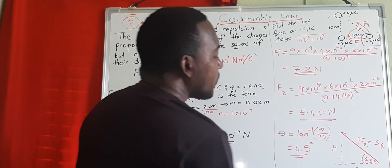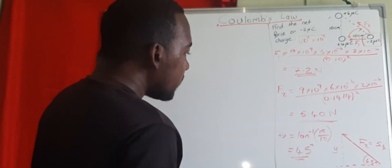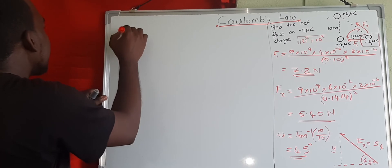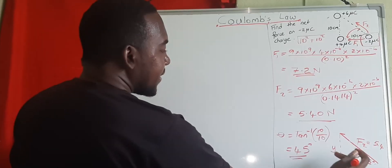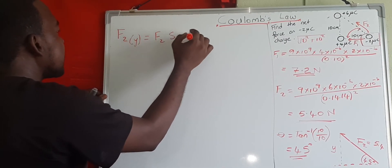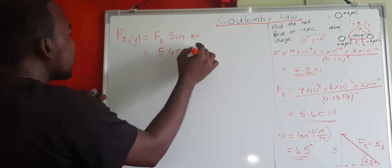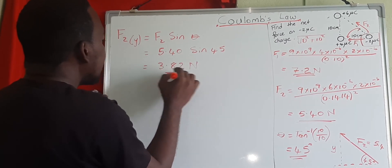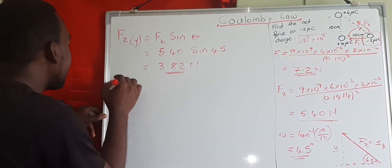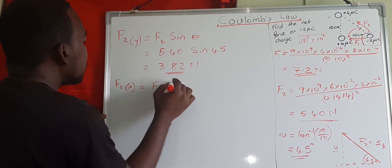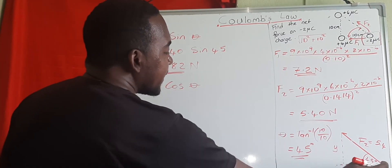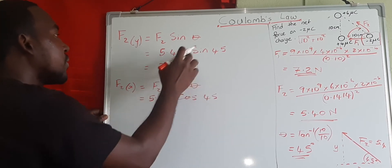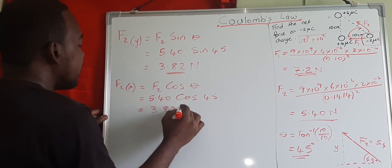The angle for F2 is 45 degrees. The y component of F2 is opposite to the angle, so F2y = F2 × sine 45° = 5.40 × sin 45° = 3.82 newtons. The x component of F2 is adjacent to the angle, so F2x = F2 × cos 45° = 5.40 × cos 45°. Since sine 45° and cosine 45° are equal, F2x is also 3.82 newtons.